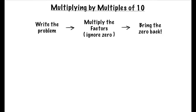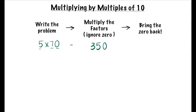Let's write the problem: 5 times 70. We know 70 is a multiple of 10. Since 70 is a multiple of 10, we're going to multiply the factors 5 and 7 and ignore the 0. 5 times 7 is 35. Now let's bring the 0 back. So we know that 5 times 70 equals 350.